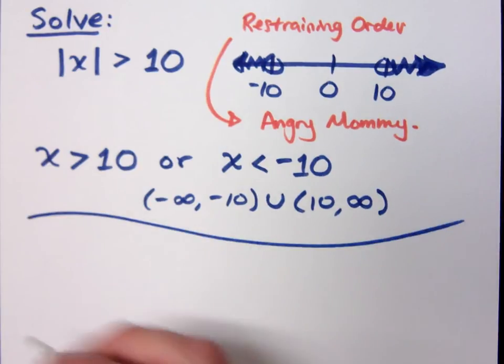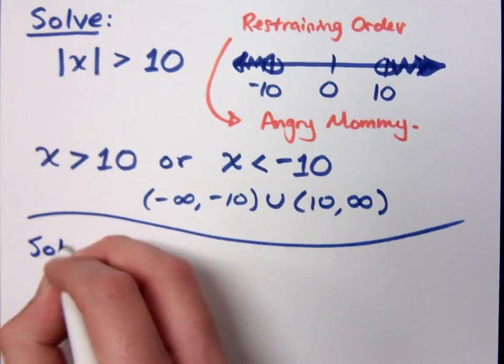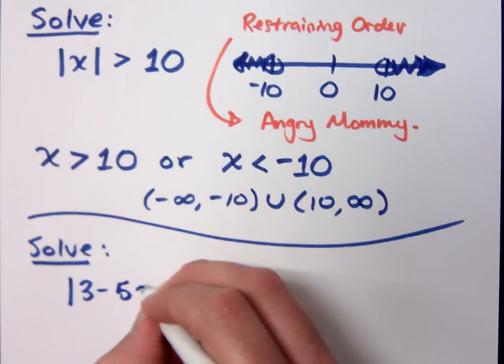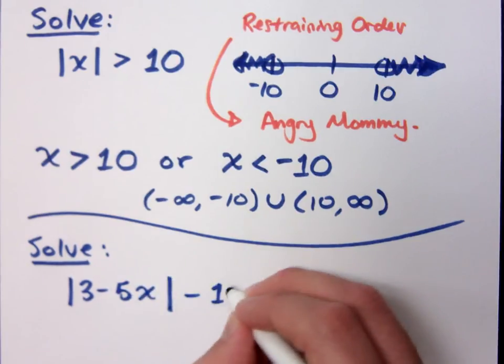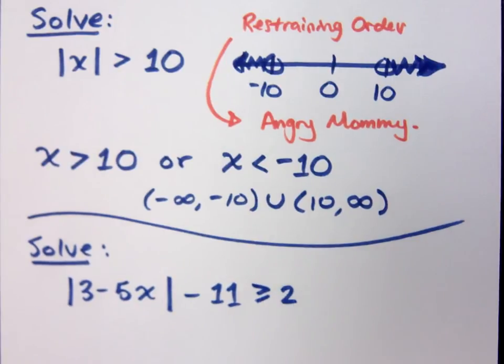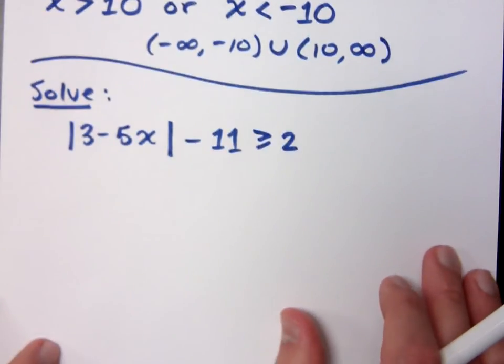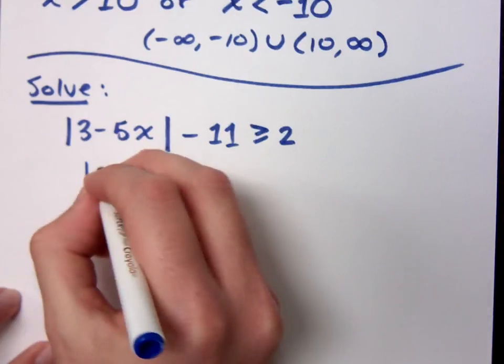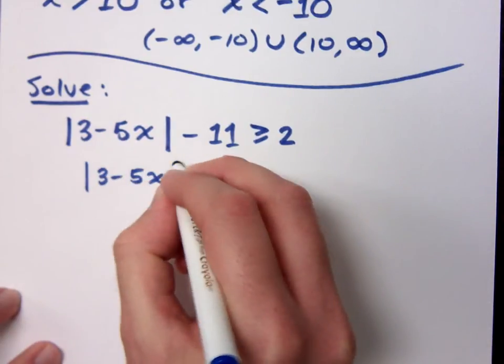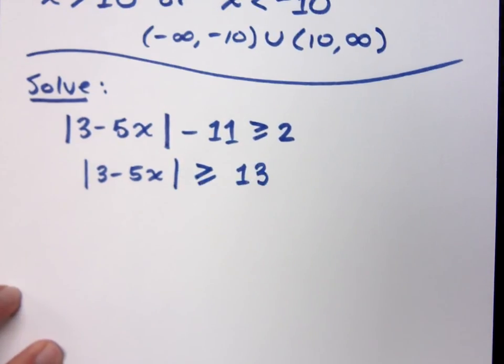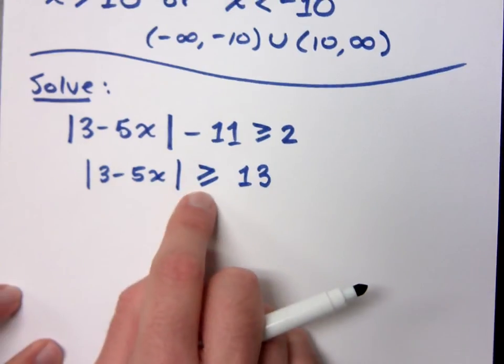Let's do another example to kind of tie this all together. If I have the absolute value of 3 minus 5x, minus 11 is greater than or equal to 2. What do you think I should do here? Move the 11 to the other side because I need to isolate my absolute value. Good. So that means the absolute value of 3 minus 5x is greater than or equal to 13.